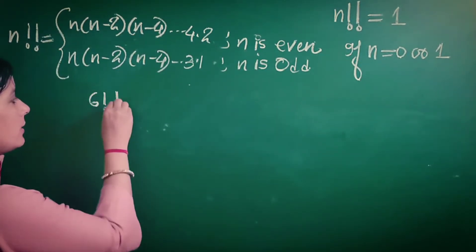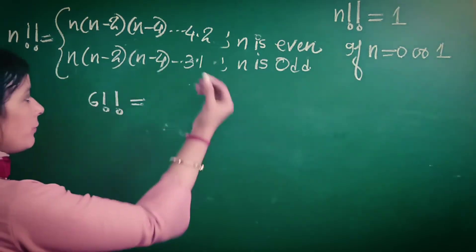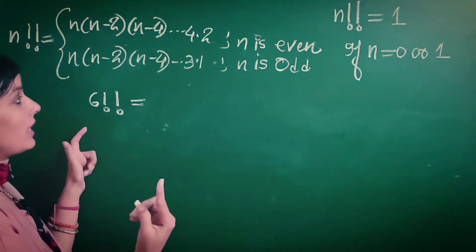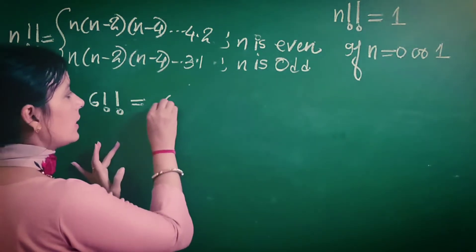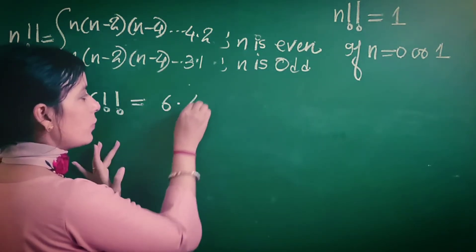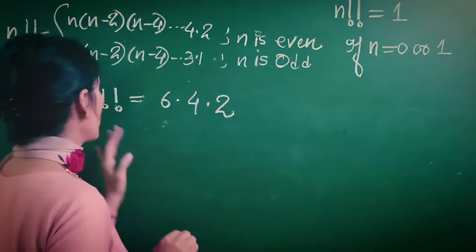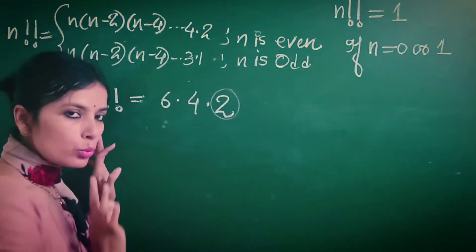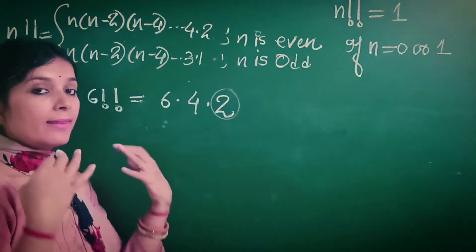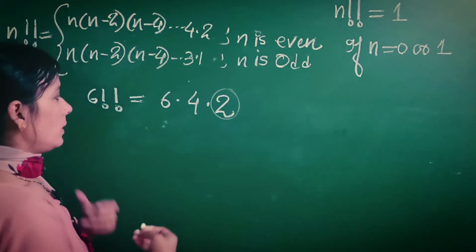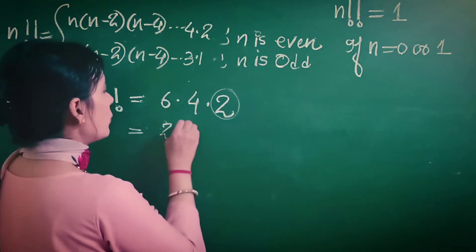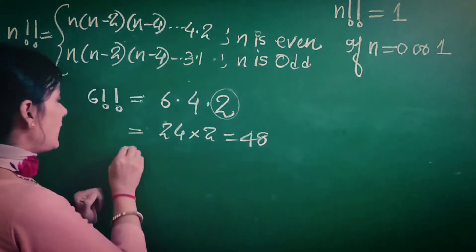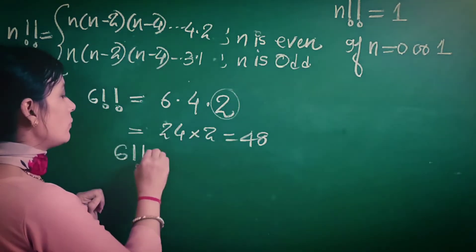Let's take an example: 6 double factorial. Here n is 6, which is even. So 6!! = 6 × 4 × 2, since the last number is 2 when n is even. That gives 6 × 4 = 24, multiplied by 2 equals 48. So 6!! = 48.